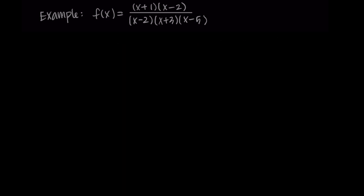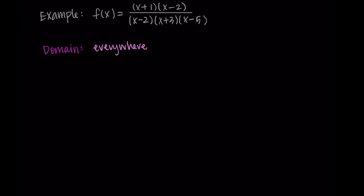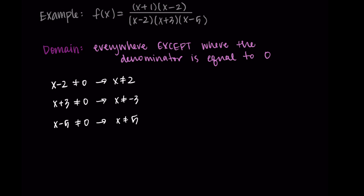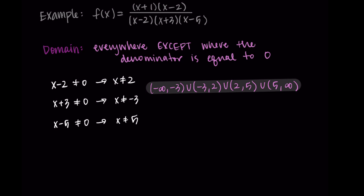Lastly, we find the domain. The domain is everywhere except when the denominator is equal to 0, so we take out the holes and vertical asymptotes. Looking at the denominator terms x minus 2, x plus 3, and x minus 5, we need all of these not equal to 0, so x is not equal to 2, x is not equal to negative 3, and x is not equal to 5. Written as an interval, this is negative infinity to negative 3, union negative 3 to 2, union 2 to 5, union 5 to infinity.